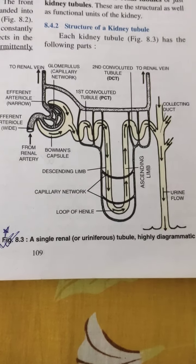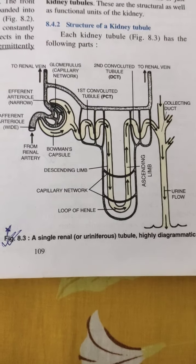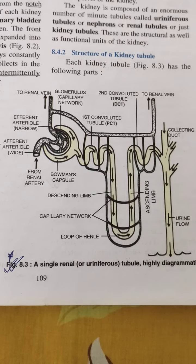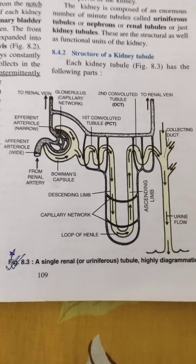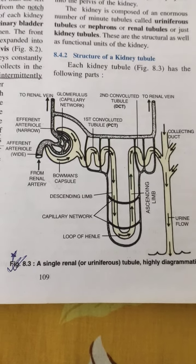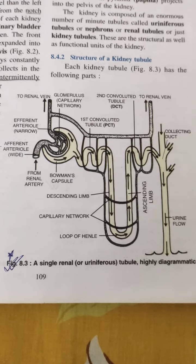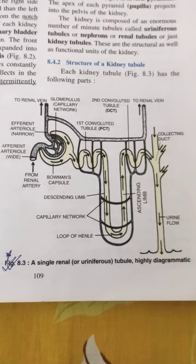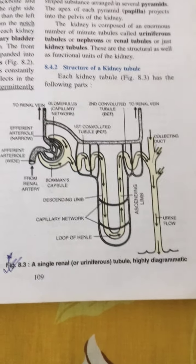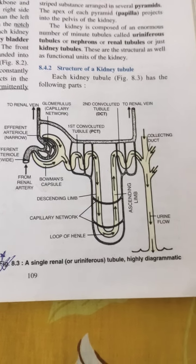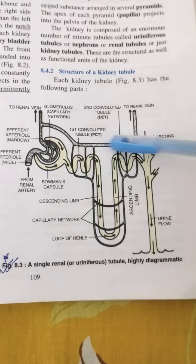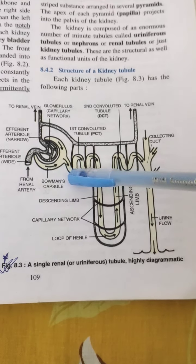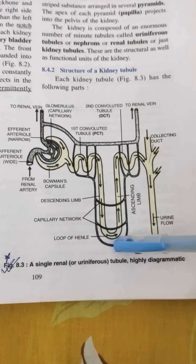This figure of the nephron is very important, and I suggest you practice drawing it, as you may get it as a diagram drawing question — not just labelling. The main parts of the nephron you can see are: the Bowman's capsule, the glomerulus, the proximal convoluted tubule (PCT), the loop of Henle, the distal convoluted tubule, and the collecting duct. Also note the entangled capillary network, known as Vasa recta (V-A-S-A R-E-C-T-A).